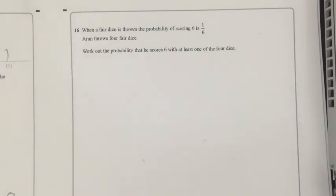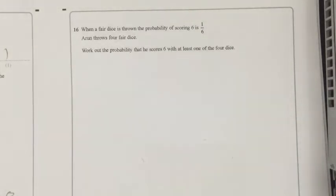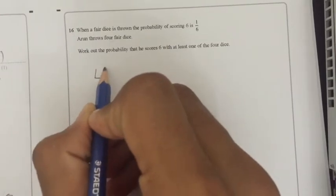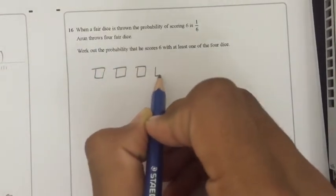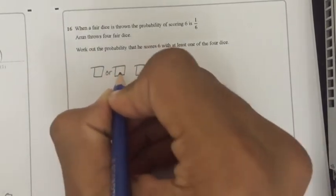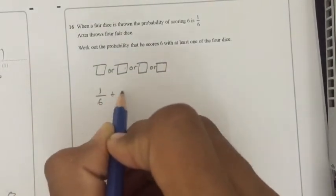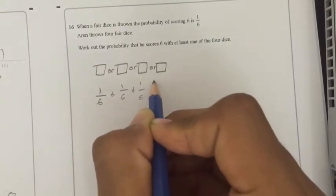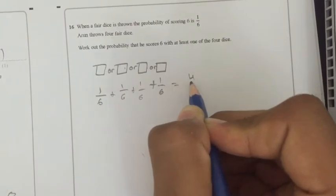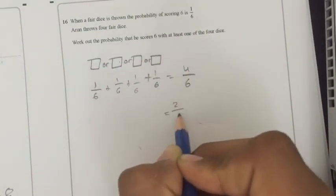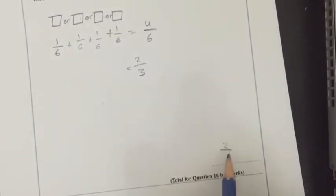Minus 0.8. Next question. When a fair dice is thrown, the probability of scoring a 6 is 1 over 6. Arun throws 4 fair dice. Work out the probability that he scores a 6 with at least 1 of the 4 dice. Simple. All it is asking is if this dice has a 6, this dice has a 6, this dice has a 6, or this dice has a 6. So, since it's asking us OR, what you do with OR is you add the probabilities. So, 1 over 6 plus 1 over 6 plus 1 over 6 plus 1 over 6 gives us 4 over 6. That's his probability, which can be simplified to 2 over 3.